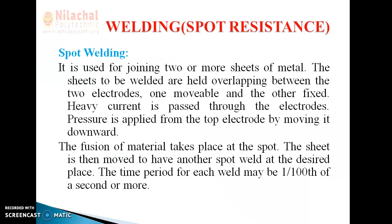We now start about the first resistance welding process, which is named as spot welding. For the examination point of view, spot welding is very important. It is used for joining two or more sheets of metal. The sheets to be welded are held overlapping between two electrodes — one movable and the other fixed. Heavy current is passed through the electrode and thereafter pressure is applied by moving the top electrode downward. The fusion of the metal takes place at the spot, and the sheet is then moved to have another spot weld at the desired place. The time period of each weld may be one to one-hundredth of a second or more.